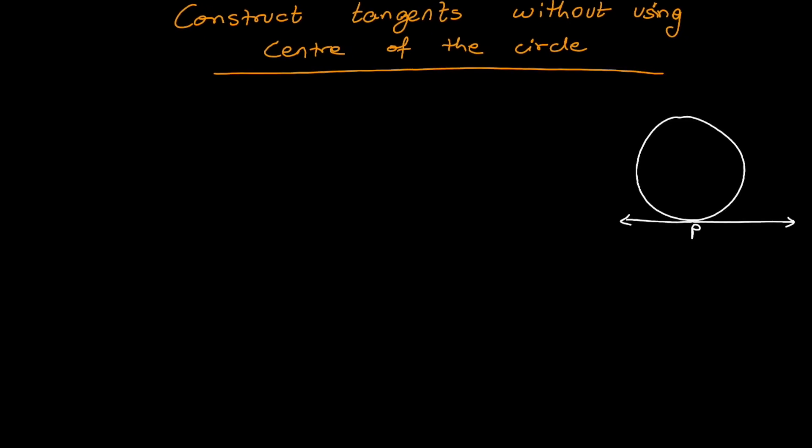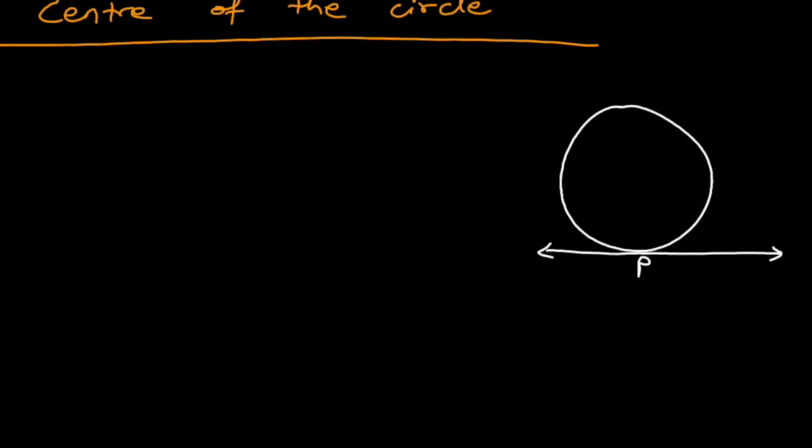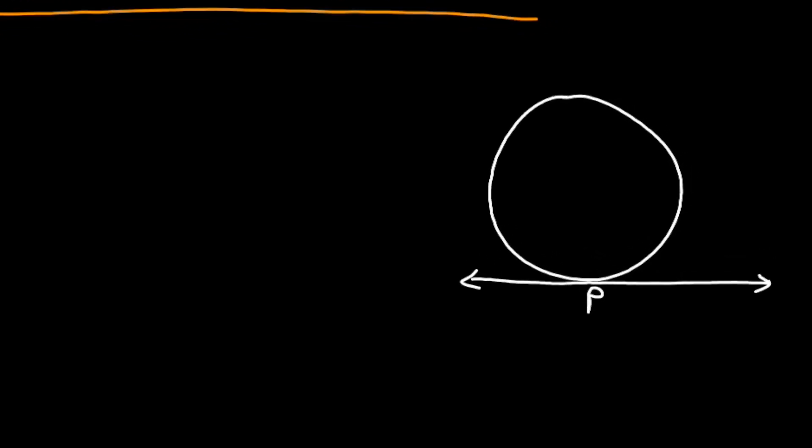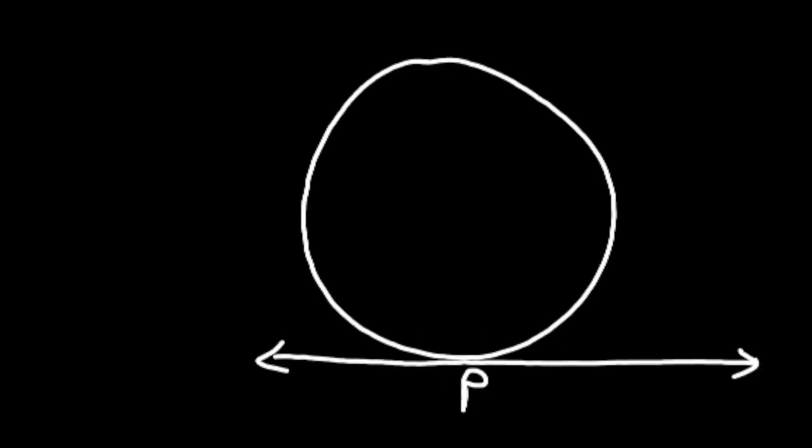This is the tangent to be drawn to this circle without using the center, so you know the point of contact. From that point of contact, you can make any chord, even it can be a diameter.